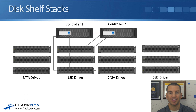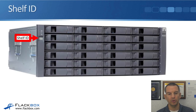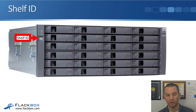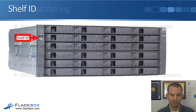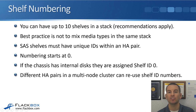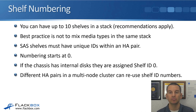That's how our stacks are going to physically look. Now let's talk about how the numbering works, because the controllers need to be able to identify the disks they'll be talking to. Each of our shelves has a shelf ID, which you can see on the left side of the shelf in the picture. You can set the shelf ID on each shelf. You can have up to 10 shelves in a stack, depending on the hardware types — there are recommendations as well, which I'll cover in the last lecture of this section.